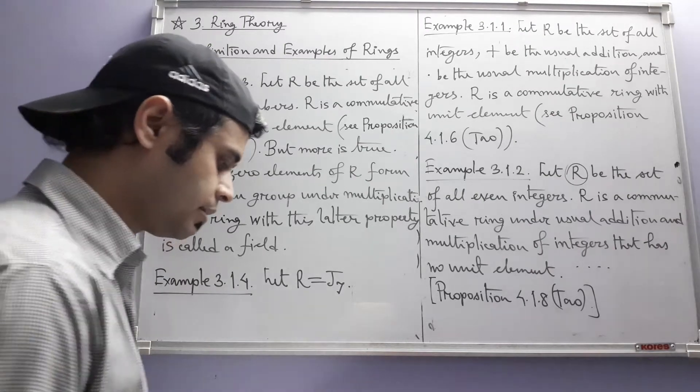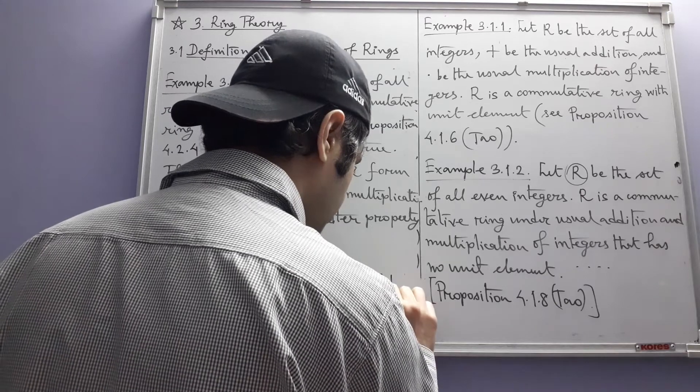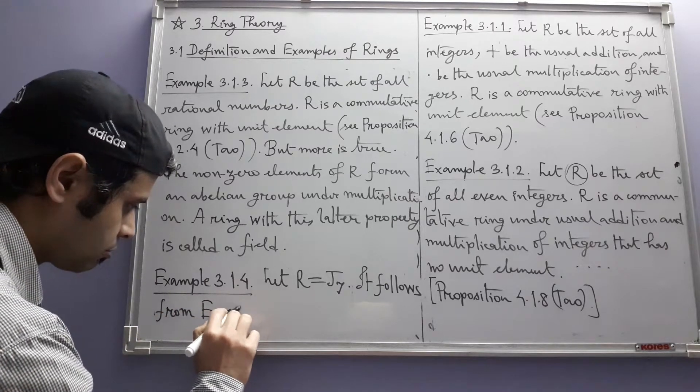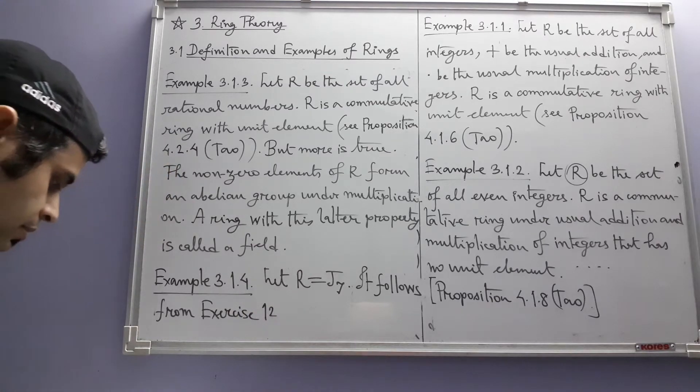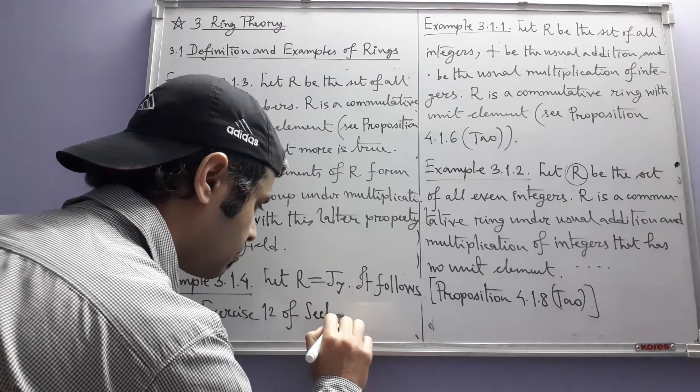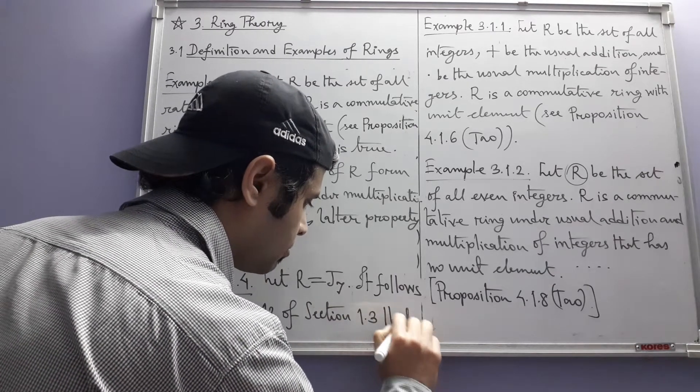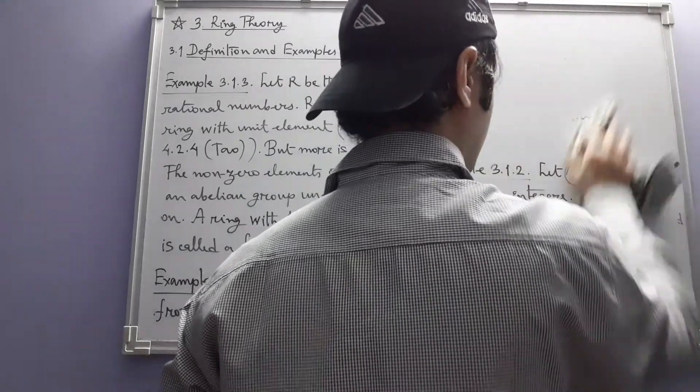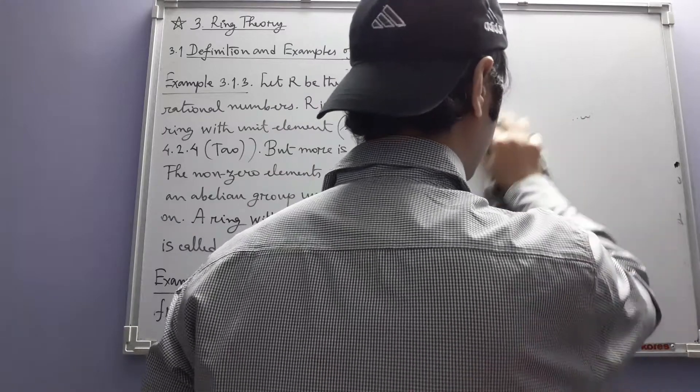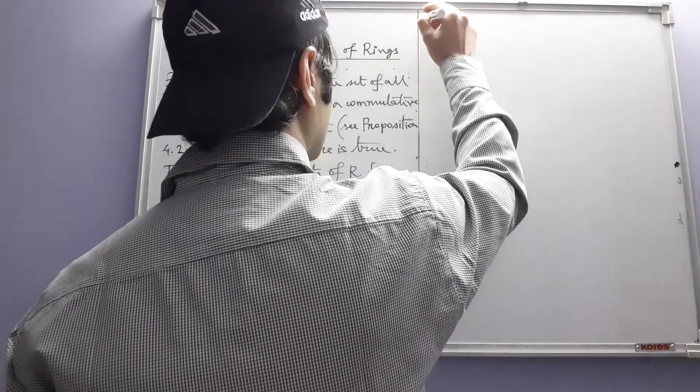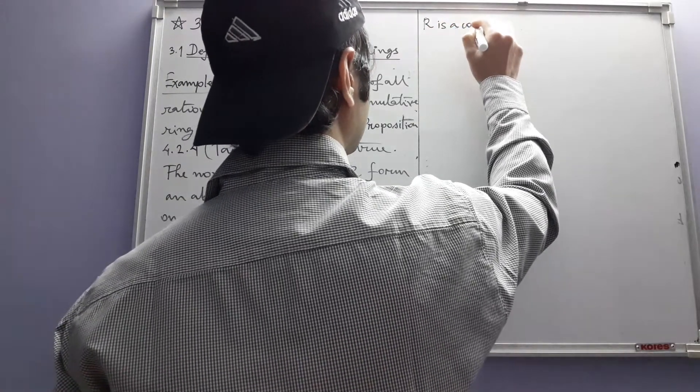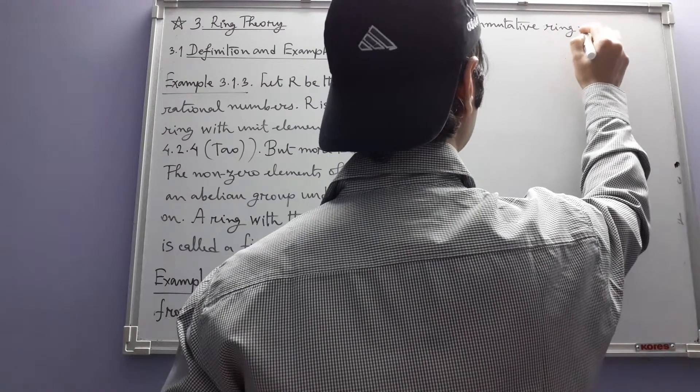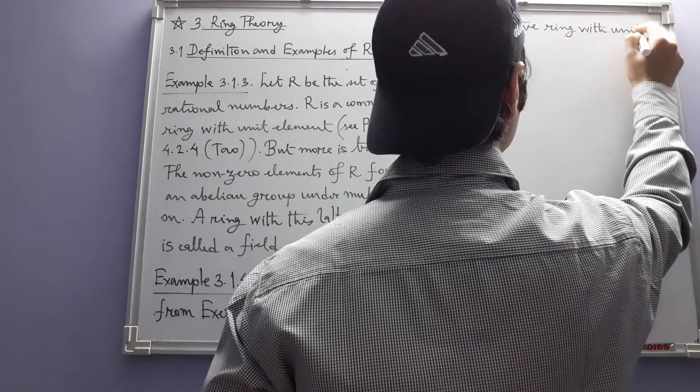So we can refer to that exercise. It follows from Exercise 12 of Section 1.3 that R is a commutative ring with unit element.